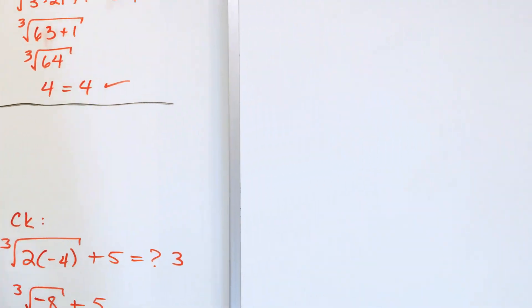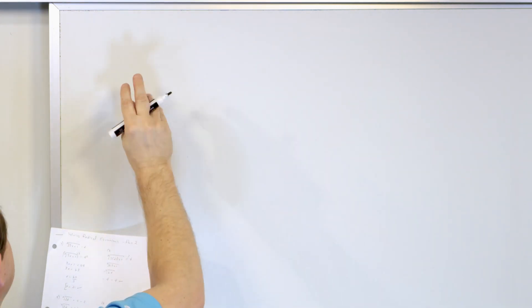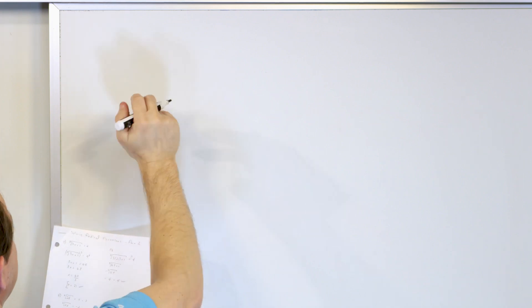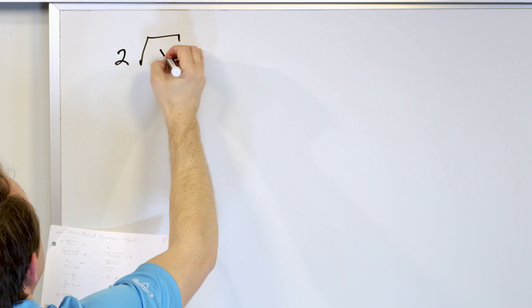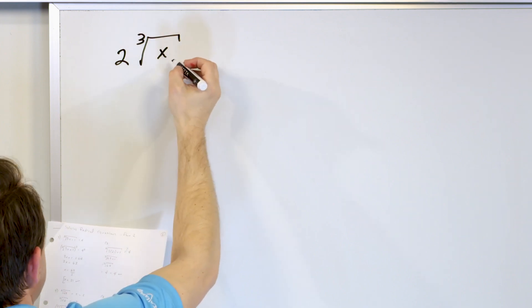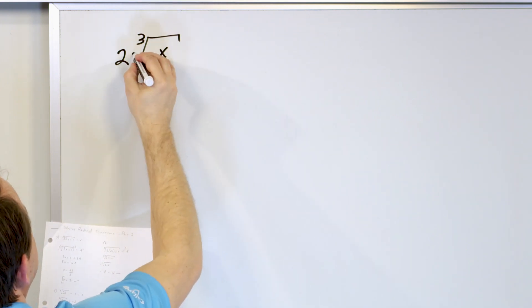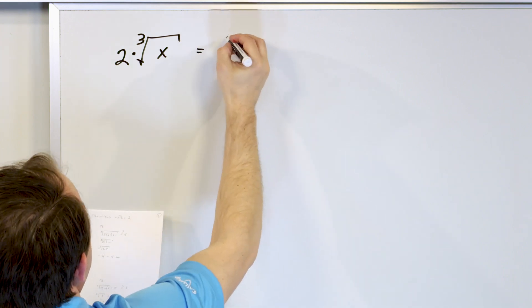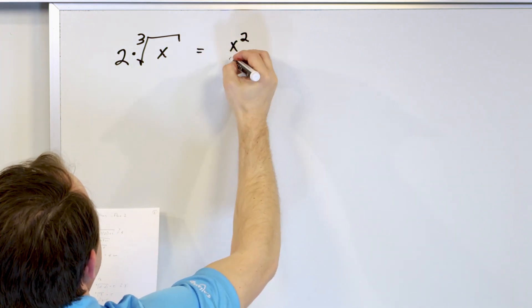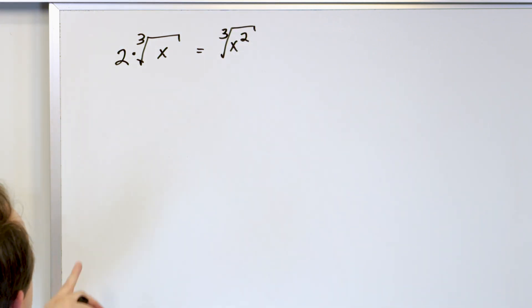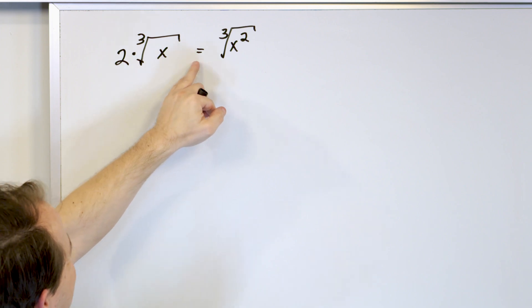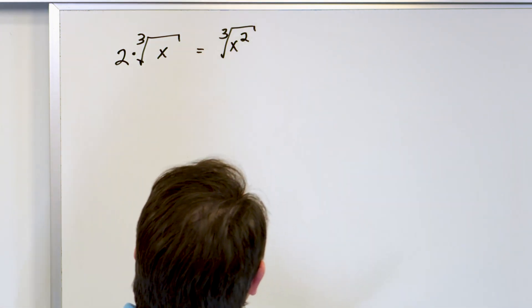The next problem is going to have more than one answer, and we're going to have to check them. This one is significantly more complex, but still not too hard to solve. What if you have 2 times the cube root of x on the left-hand side, and x squared also wrapped under a cube root on the right? So we have a very weird-looking equation: 2 times the cube root of x is equal to the cube root of x squared.